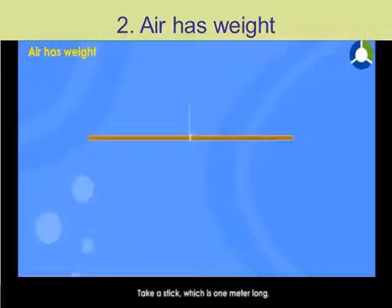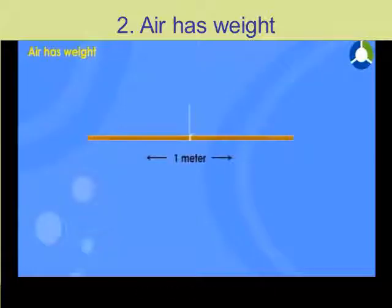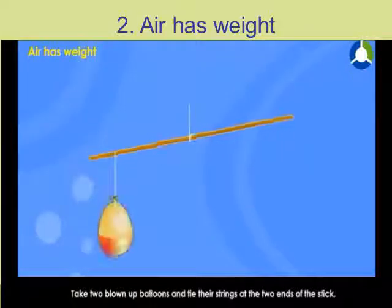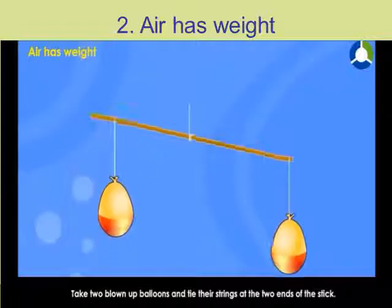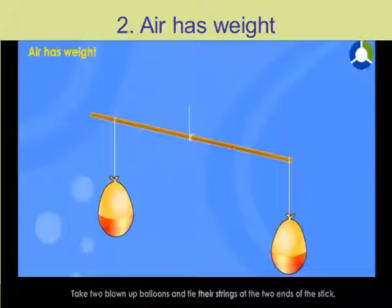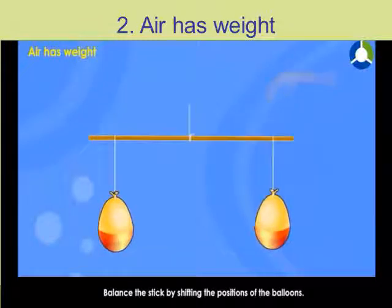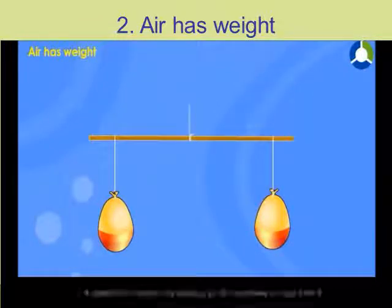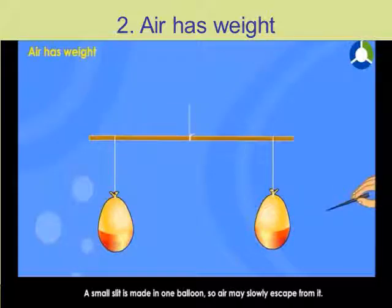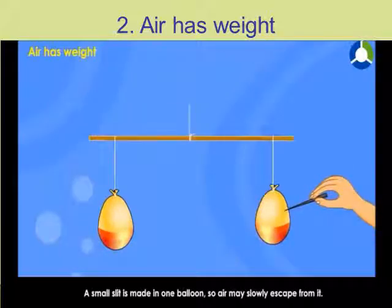Property two: Air has weight. To find this out, you will need a weighing machine and two balloons. Blow the balloons and put them on the weighing machine and observe. You can notice that both balloons have equal weight. Now push a needle into one of the balloons. The blown balloon goes down compared to the deflated balloon. This proves that air has weight.